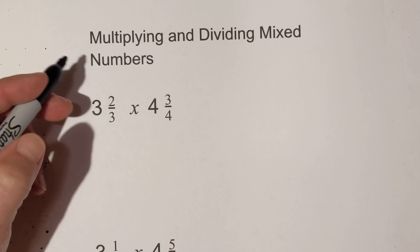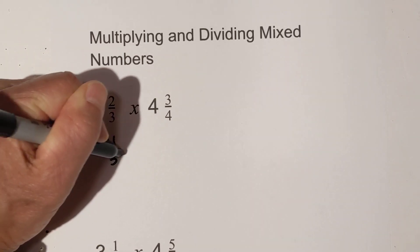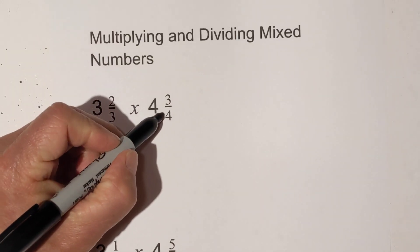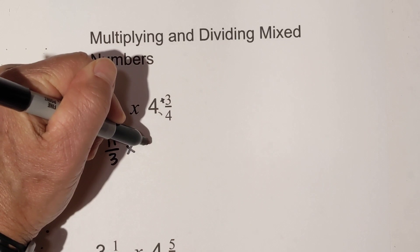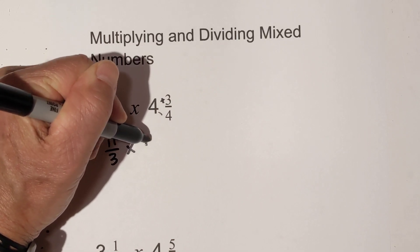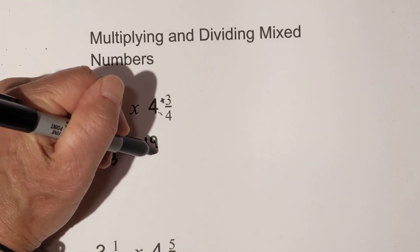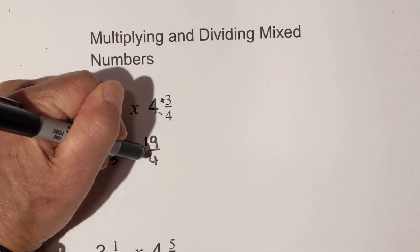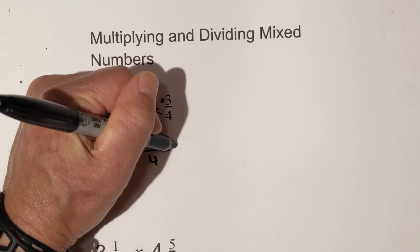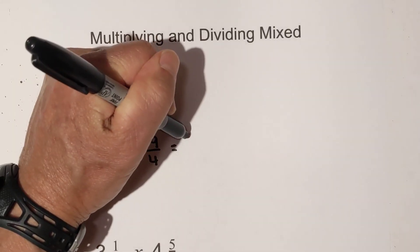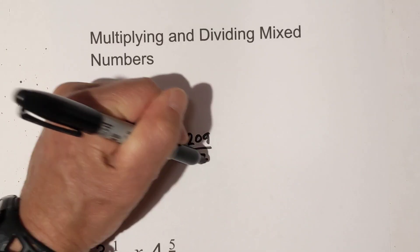For 3 and 2/3 times 4 and 3/4: three times three is nine, plus two is eleven — so that's eleven thirds. Four times four is sixteen, plus three is nineteen — so nineteen over four. Now you just multiply straight across: that becomes two hundred and nine, and three times four is twelve.